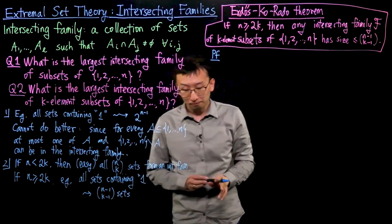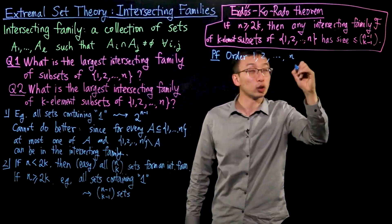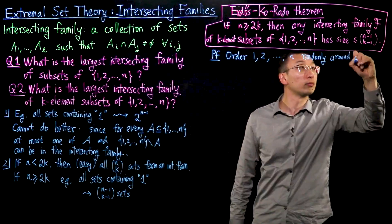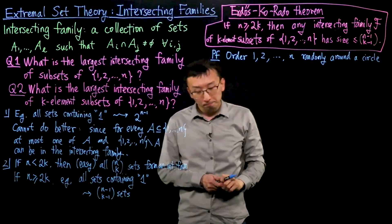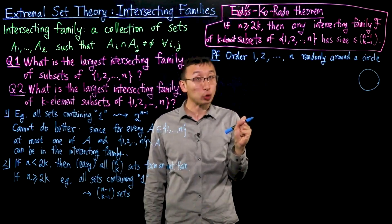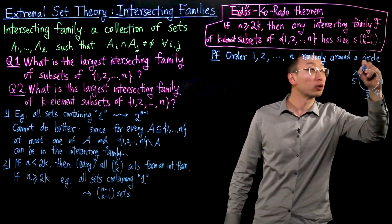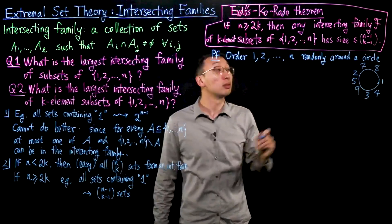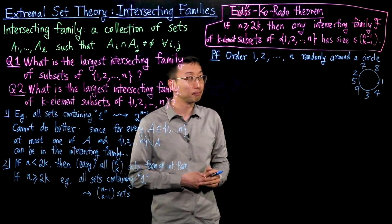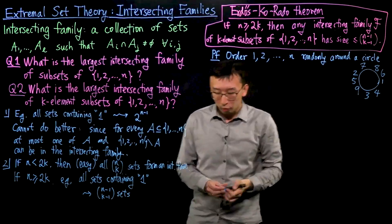Let us now prove the Erdős–Ko–Rado theorem using the probabilistic method. We start by ordering the numbers 1, 2, 3, …, N randomly around a circle — that is, we take a uniformly random permutation of {1, …, N} and place the numbers around the circle in that order. For example, with N = 9, we place 9 numbers in some circular order chosen uniformly at random.